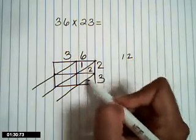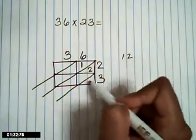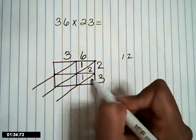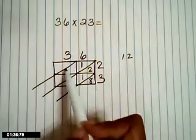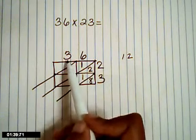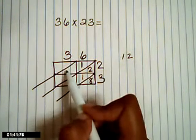The next one is 6 times 3. 6 times 3 gives us 18. 3 down, 2 across. 3 times 2 gives us 6.